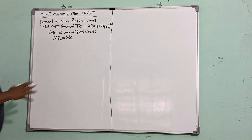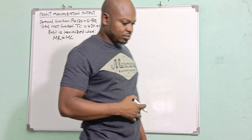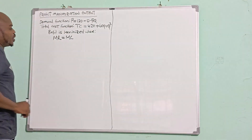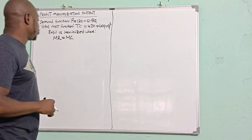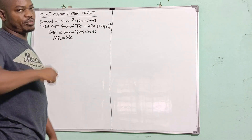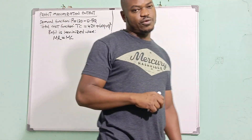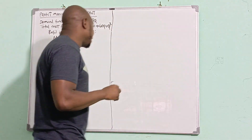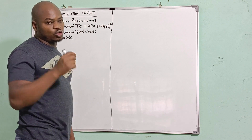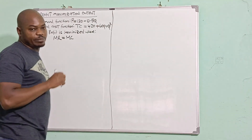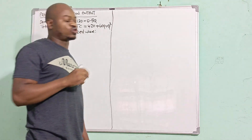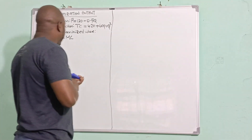To find the marginal revenue and marginal cost, I need to have a total revenue function. To find the marginal cost I need the total cost function, which I've already been given. What I don't have is the total revenue — I only have the price, but from the price I'm capable of calculating the total revenue.